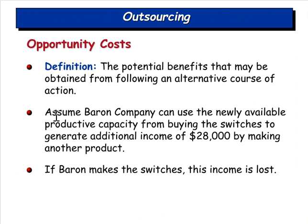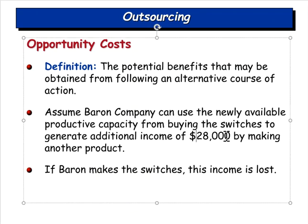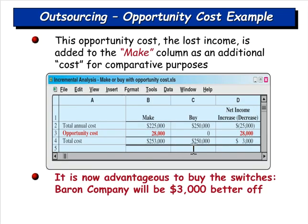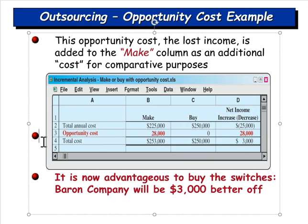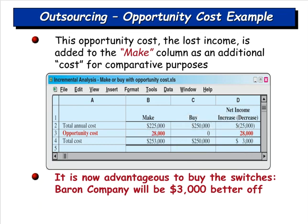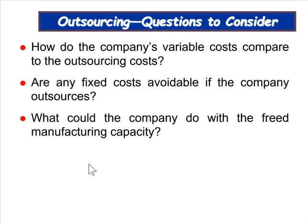Now assume the freed-up capacity could be used to generate additional income of $28,000 by making another product. That's an opportunity cost: if they make the switches, they lose out on that $28,000 opportunity. In that case, it's more beneficial to buy the switches and free up capacity to make the other product — gaining an additional $3,000 net benefit, though it's a modest advantage.